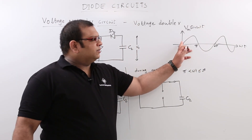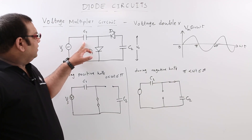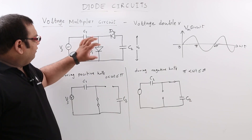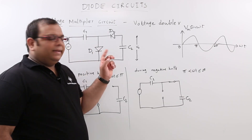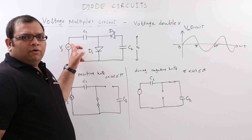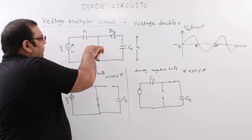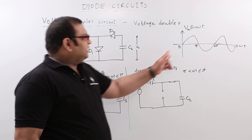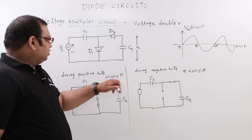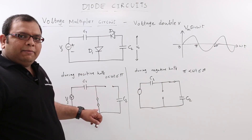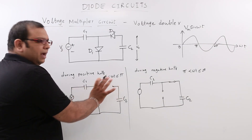The capacitor will always charge to the peak value of whatever voltage we are applying. In this circuit, according to the positions of the diodes, diode D1 will conduct during the positive half cycle because the positive side is connected to the voltage source. So during the positive half, from 0 to pi, diode D1 will conduct. When D1 is conducting, the equivalent circuit shows D1 as a short and D2 as open.